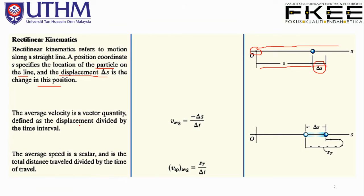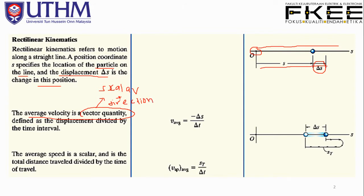The second concept is average velocity, which is a vector quantity. A vector quantity consists of a scalar — which is the magnitude — as well as direction. This is to recall or recap the definition of a vector.